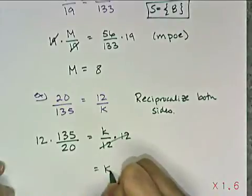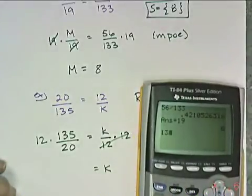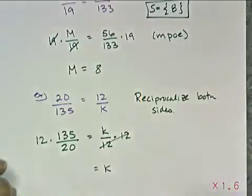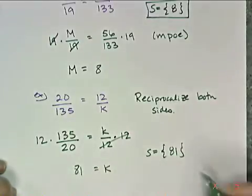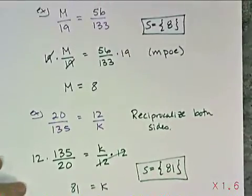Those are gone. I'm left with a k. And so then now I do the arithmetic. I take 135 and divide it by 20, and then I multiply it by 12, and I get my answer, which in this case is 81. So my solution, therefore, is 81. And that's how I treat a proportion like an equation.